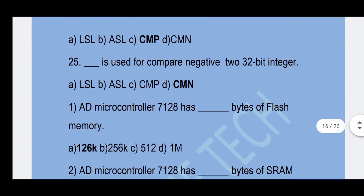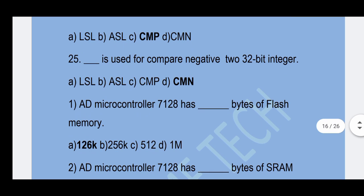Next question (25th): Which mnemonic is used to compare two 32-bit integers (negative)? Option D — CMN is the correct answer.